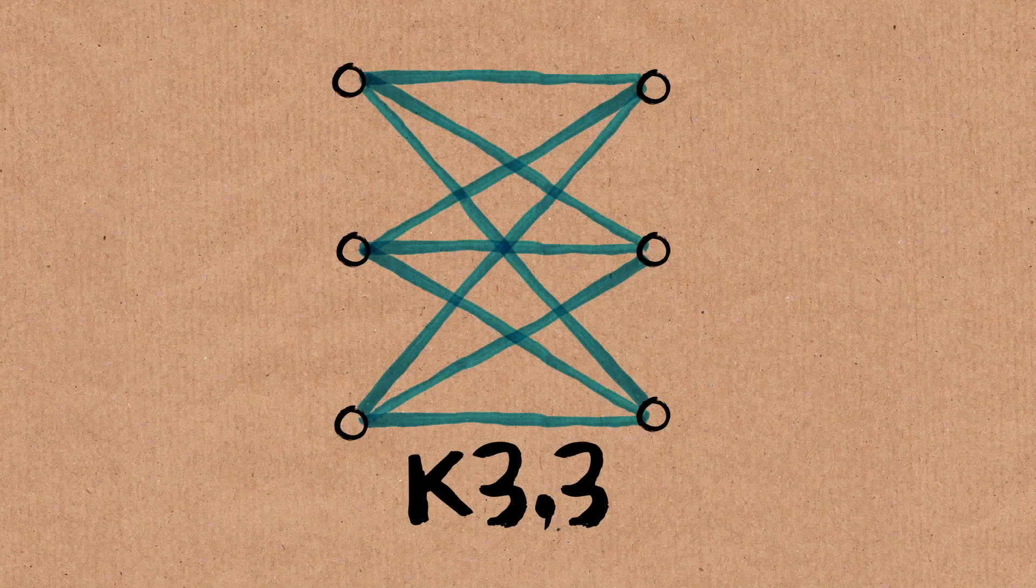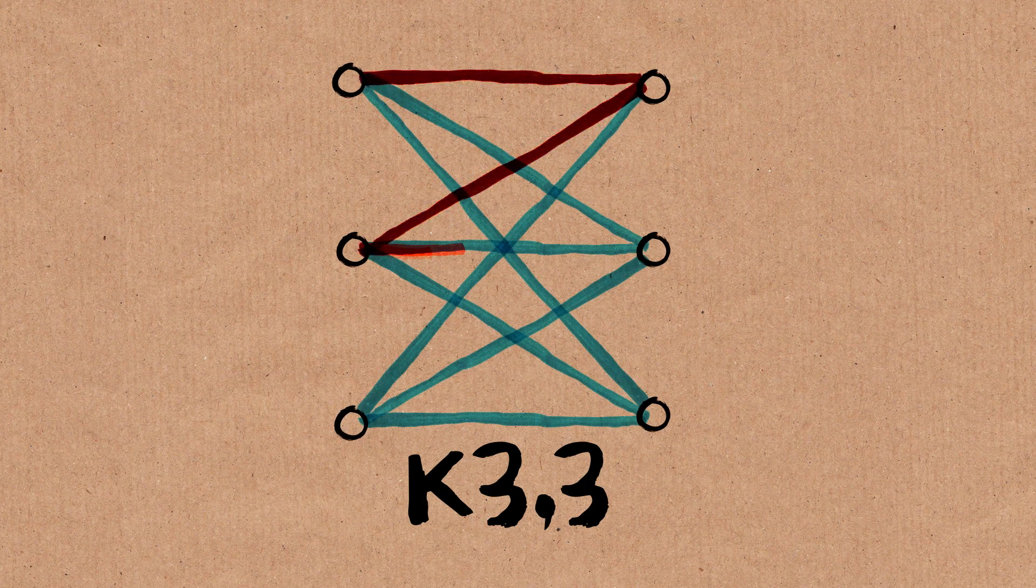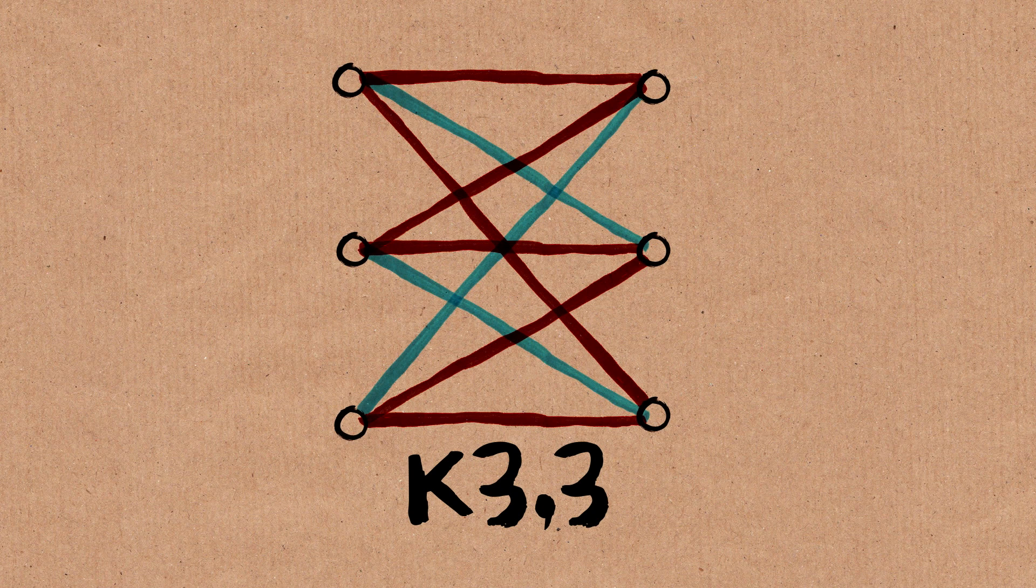Look at a cycle, start looking at this vertex, it's going to go right, left, right, left, right, left, and eventually it has to come back. So it's going to have an even number of vertices. So, in particular, it doesn't have triangles.